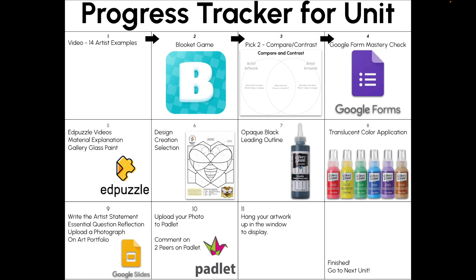The progress tracker for this unit: you'll start by looking at 14 artist examples, play a Block It game, and do a compare and contrast activity. Then you'll do a Google Form mastery check for identifying stained glass artworks and an Edpuzzle about gallery glass paint. You'll choose a design by creating one or selecting a pre-made template, do the black leading outline, and after it dries, apply color. Then you'll write your artist statement, take photographs, share on Padlet, comment on peers' work, and we'll hang the artwork in the window before moving to the next unit.